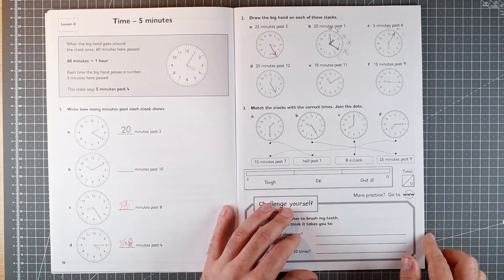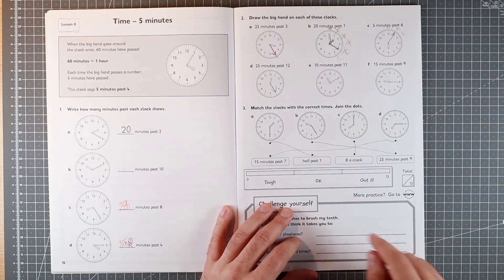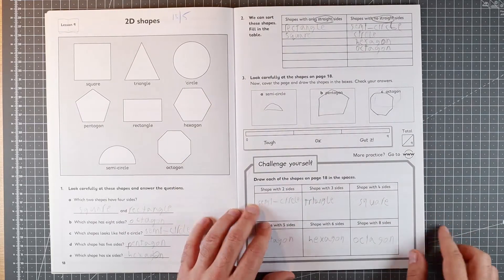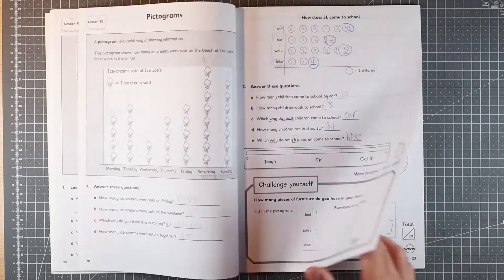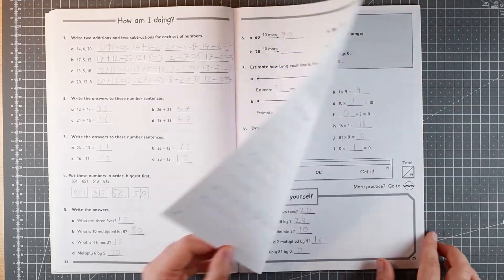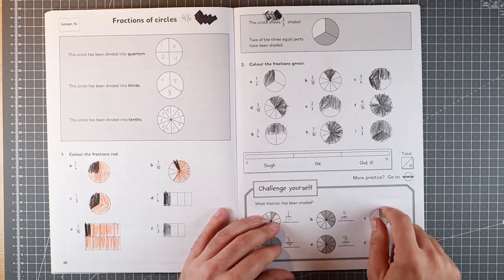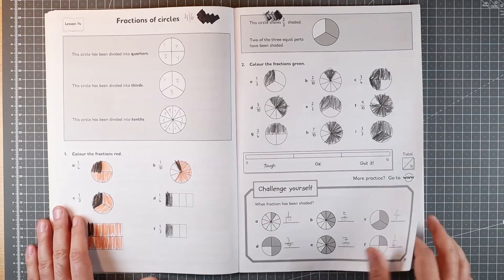It jumps around from division to time to geometry. There's an expectation of knowing Greek names for the shapes. A bit of drawing here and there, then fractions all of a sudden.